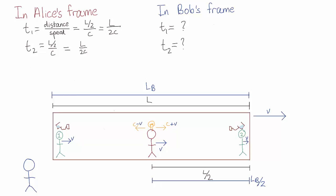So in this case, let's calculate t1. Alice and friend 1 are initially separated by a distance Lv over 2, and the photon and friend 1 are approaching each other at a speed c minus v plus v.